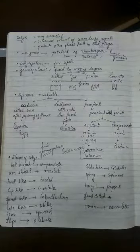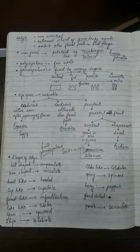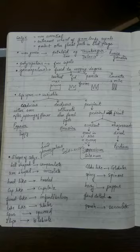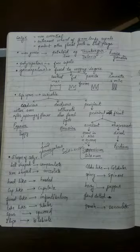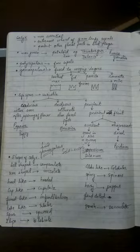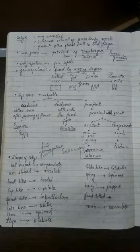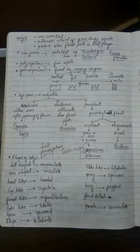Now calyx are the non-essential floral part and they are the first one in the flower on the outermost or you can say the lowermost node. And they are the outermost whorl and they are made up of green leafy sepals and function is to protect the other floral parts during the bud stage plus to perform photosynthesis.